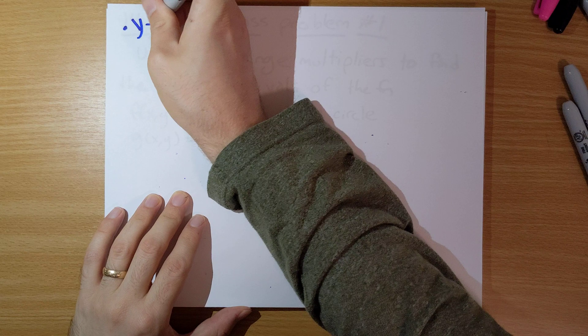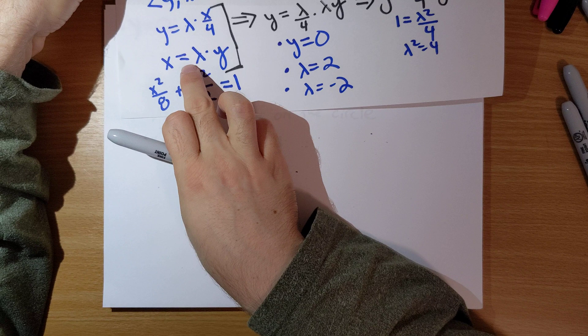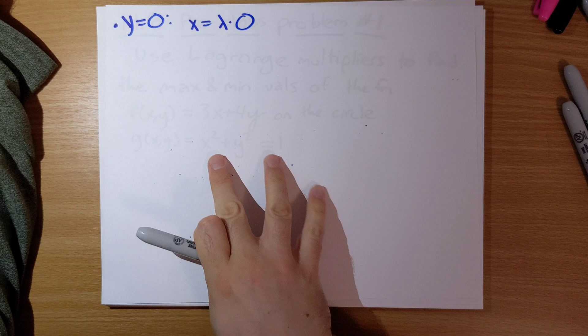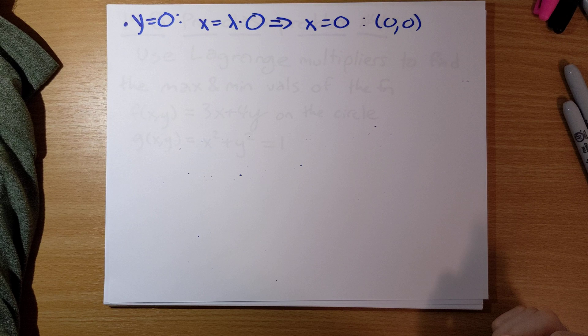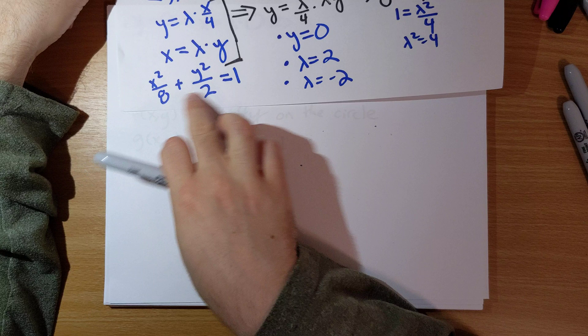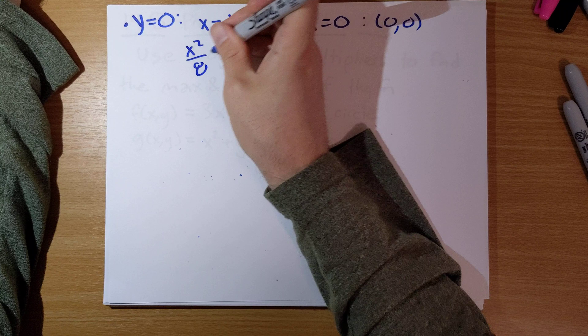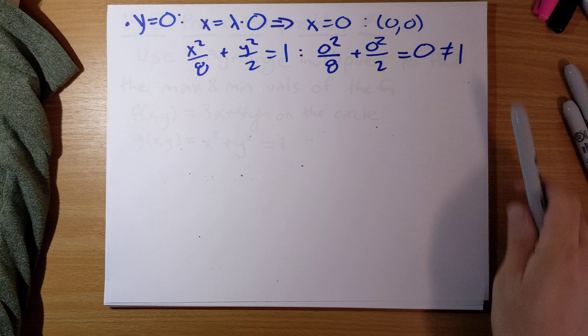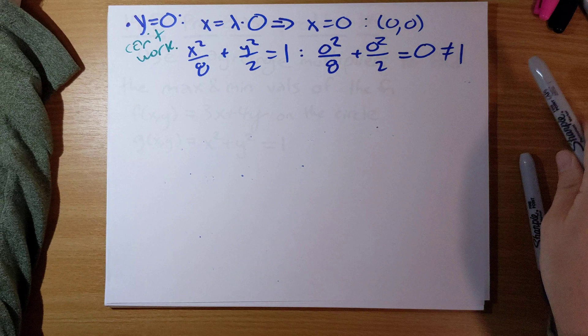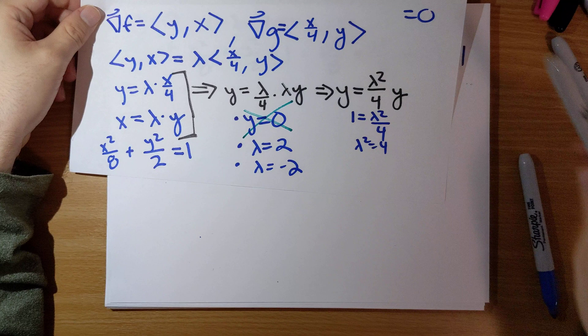Let's start with the y equals 0 case. If y equals 0, we know x equals lambda times y, so x equals 0. But the point (0, 0) must satisfy the constraint x squared over 8 plus y squared over 2 equals 1. Plugging in gives 0, which is not equal to 1. This doesn't work, so we can rule out the case y equals 0.